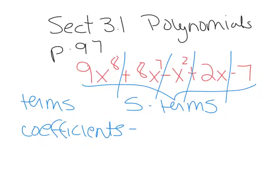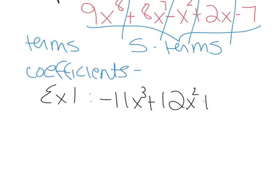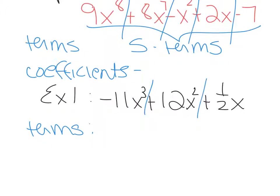Example 1 gives us a new polynomial: negative 11x cubed plus 12x squared plus 1 half x, and asks us to identify the terms and the coefficients. To identify the terms, if you use the vertical lines, there are three terms. The first term is negative 11x cubed, the second term is 12x squared, and the third term is 1 half x.